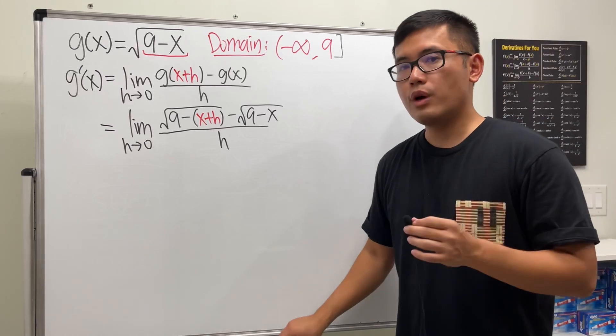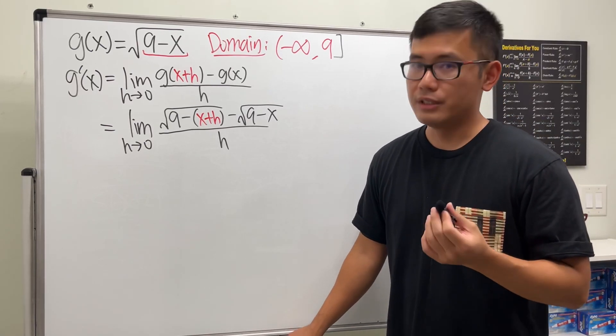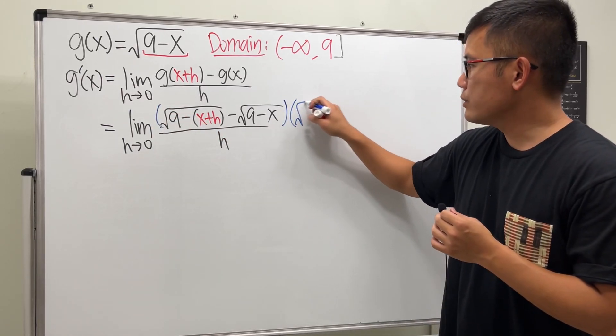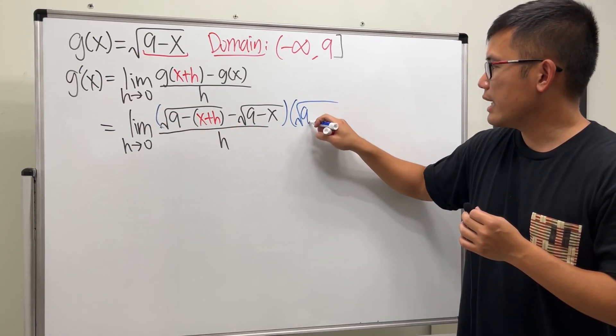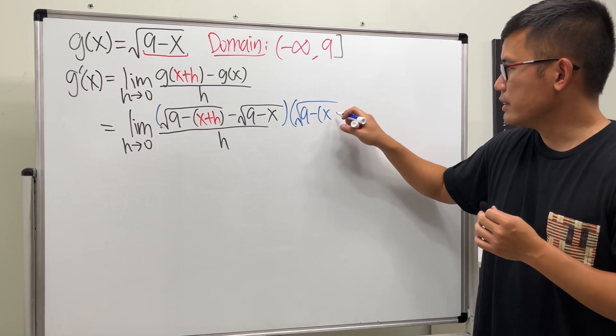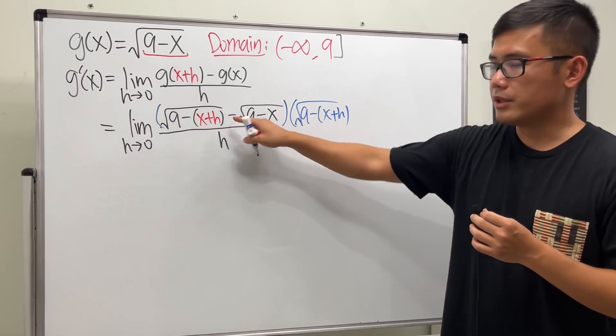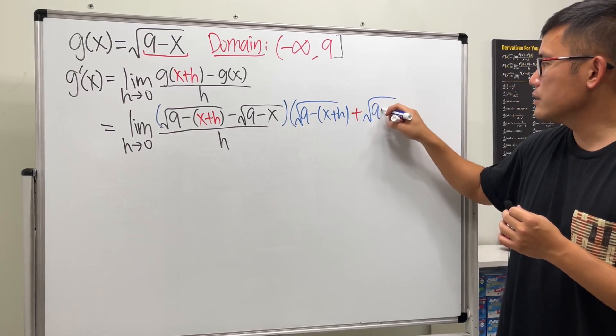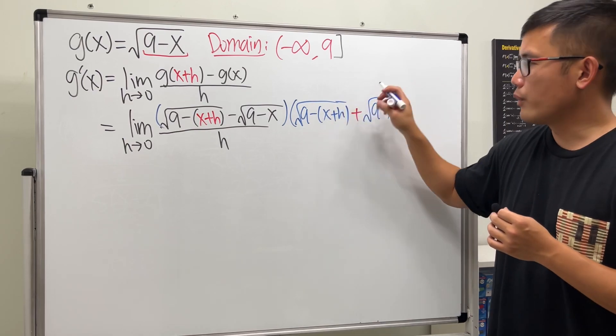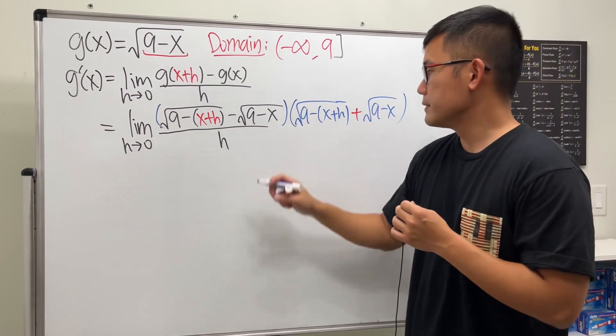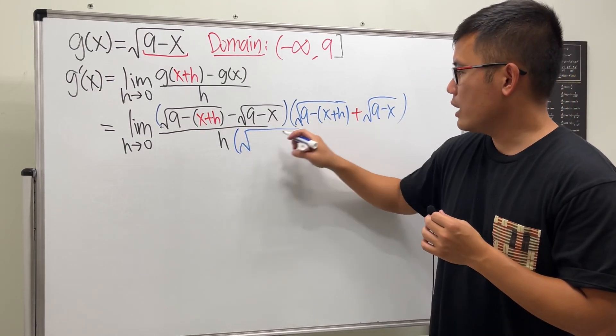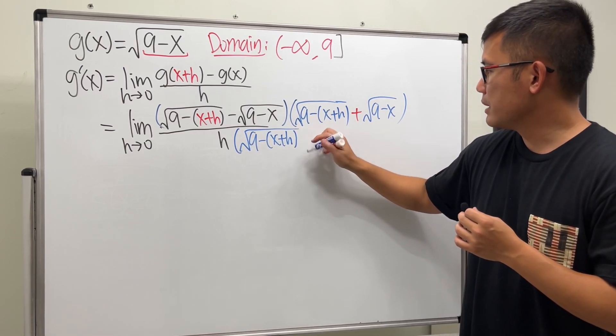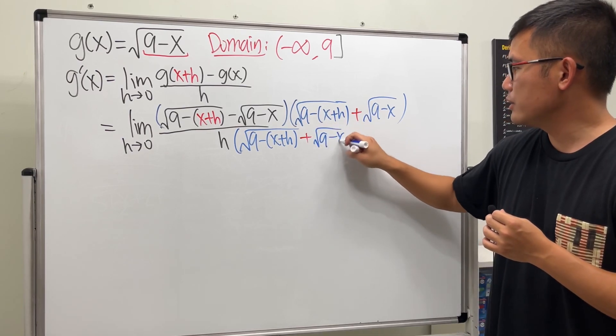Now we have a square root situation, so what do we do? The conjugate. I'm going to multiply the top and bottom by square root of 9 minus the parentheses x plus h, but in the middle we change that to a plus. The second part stays the same as well. We do the same thing on the bottom, so we have the square root of 9 minus x plus h, and then plus square root of 9 minus x.